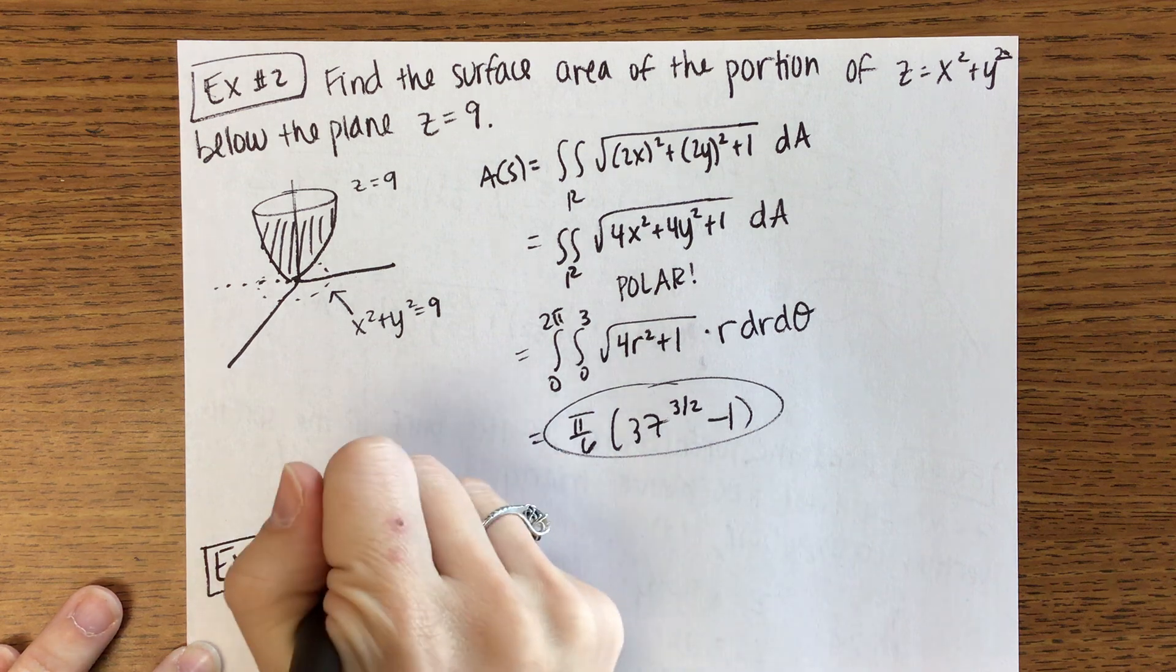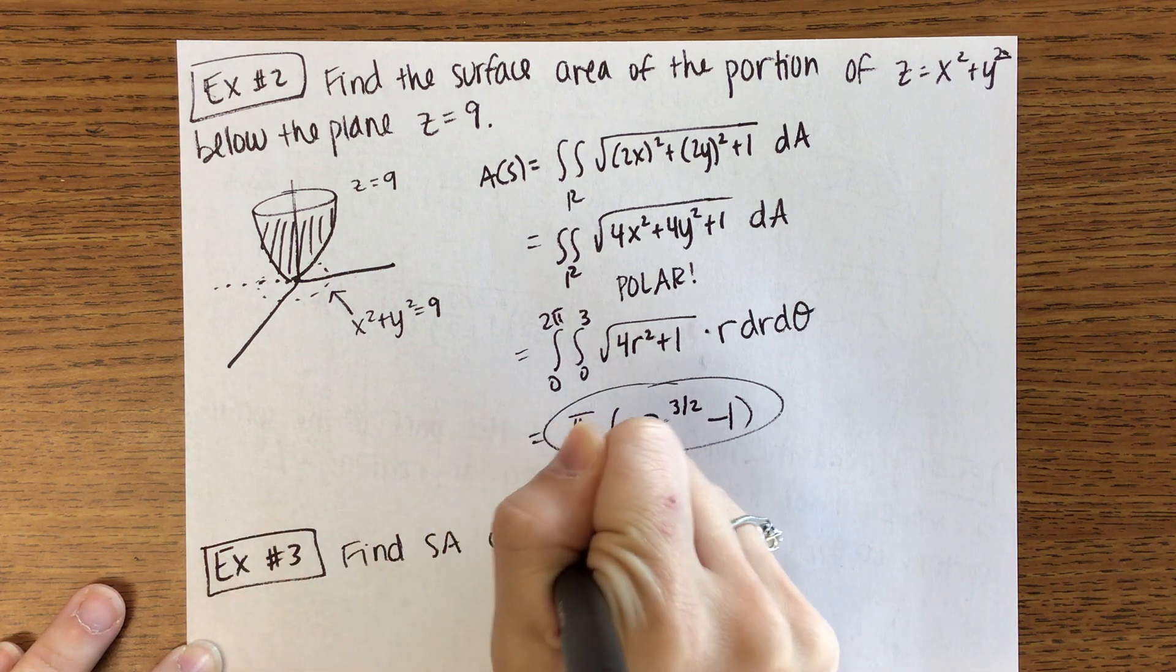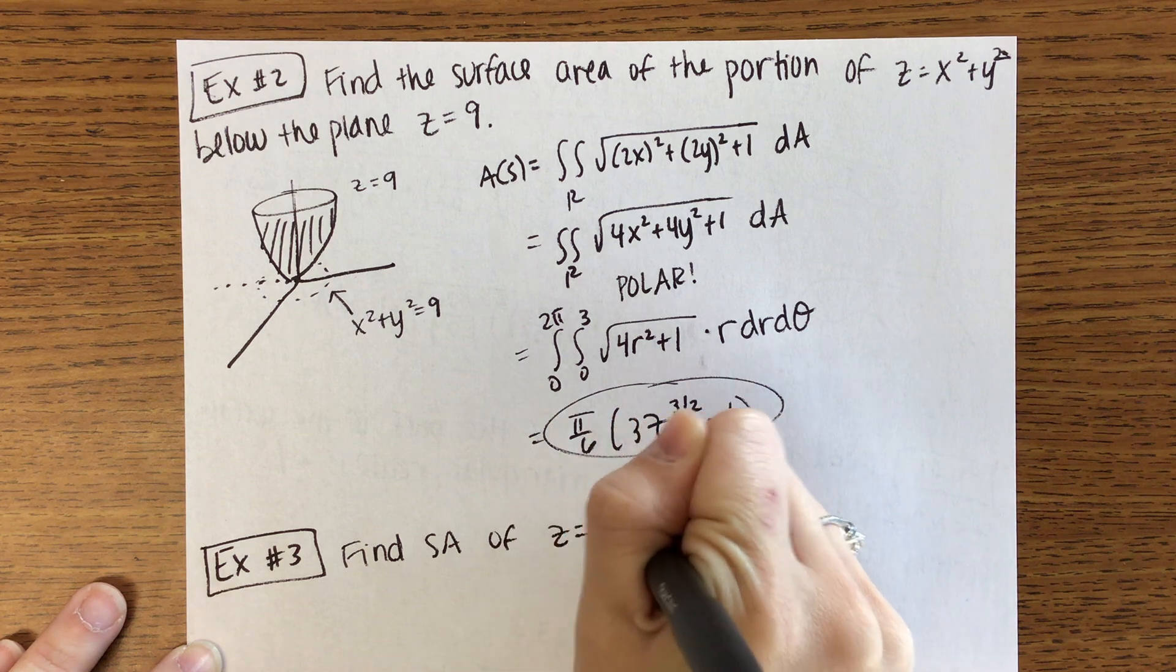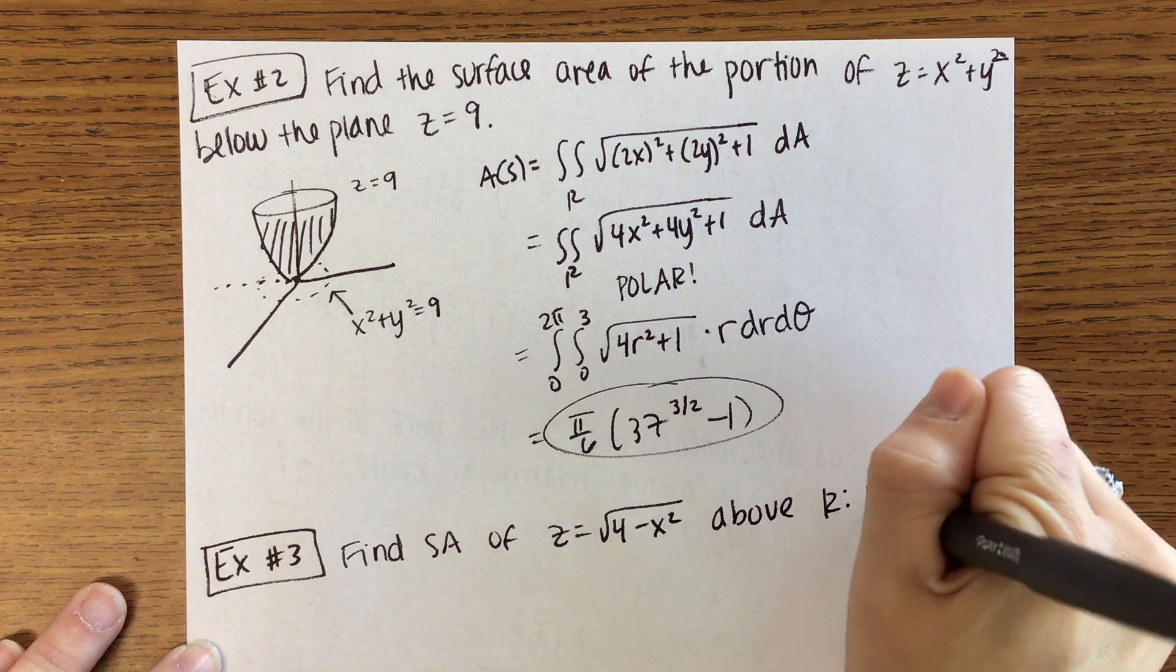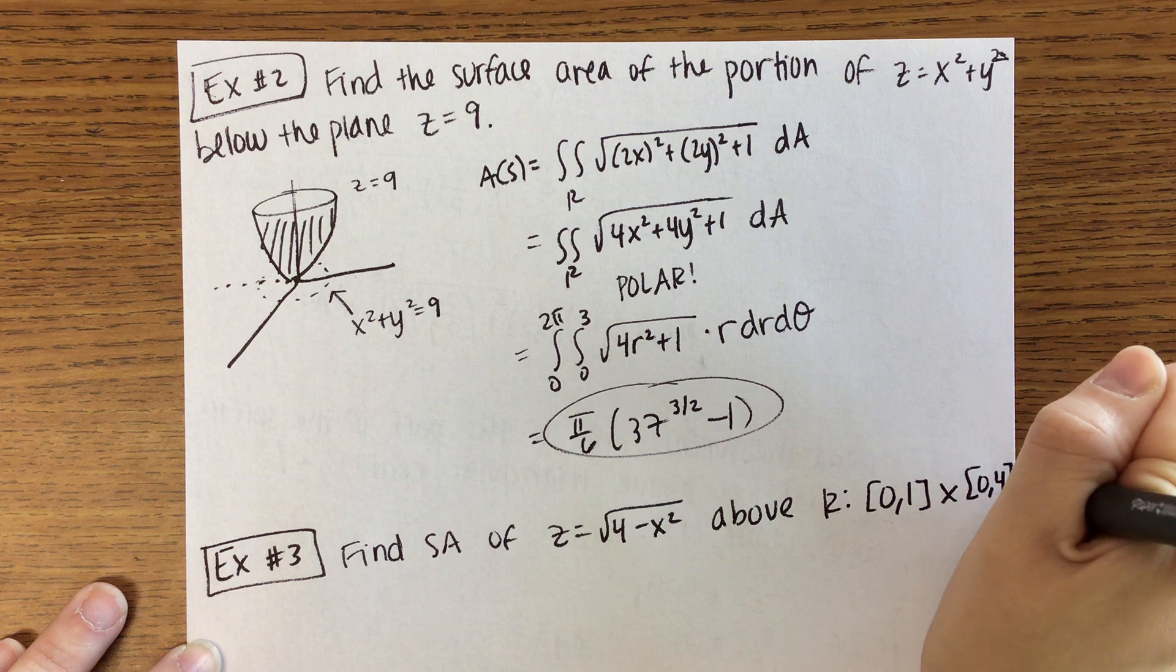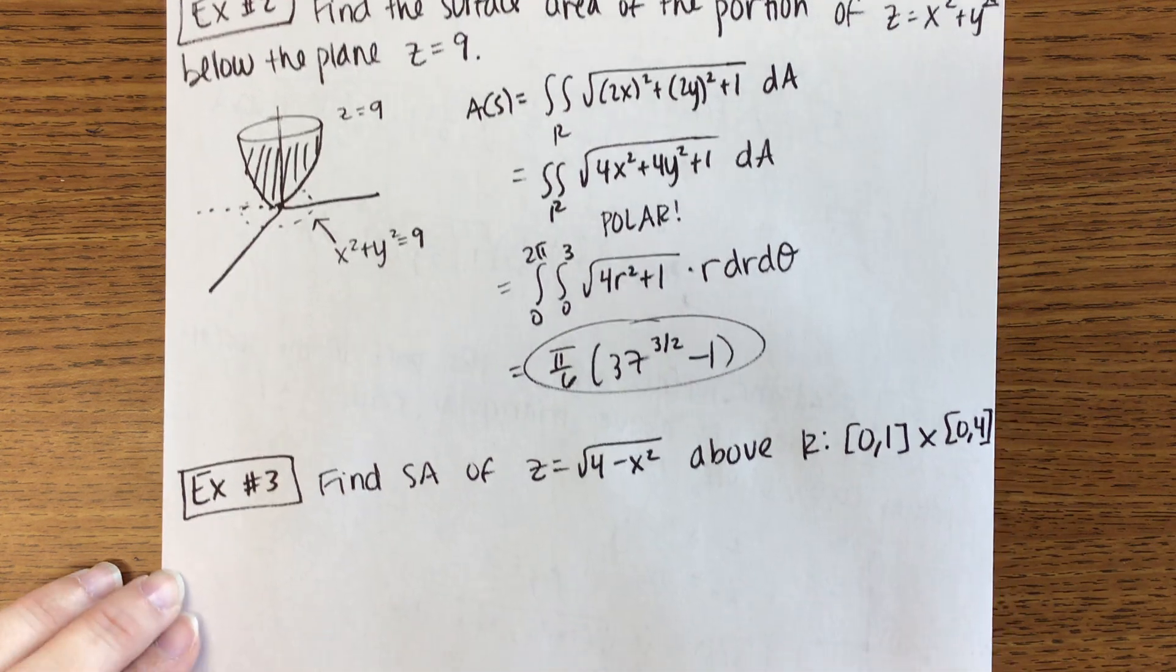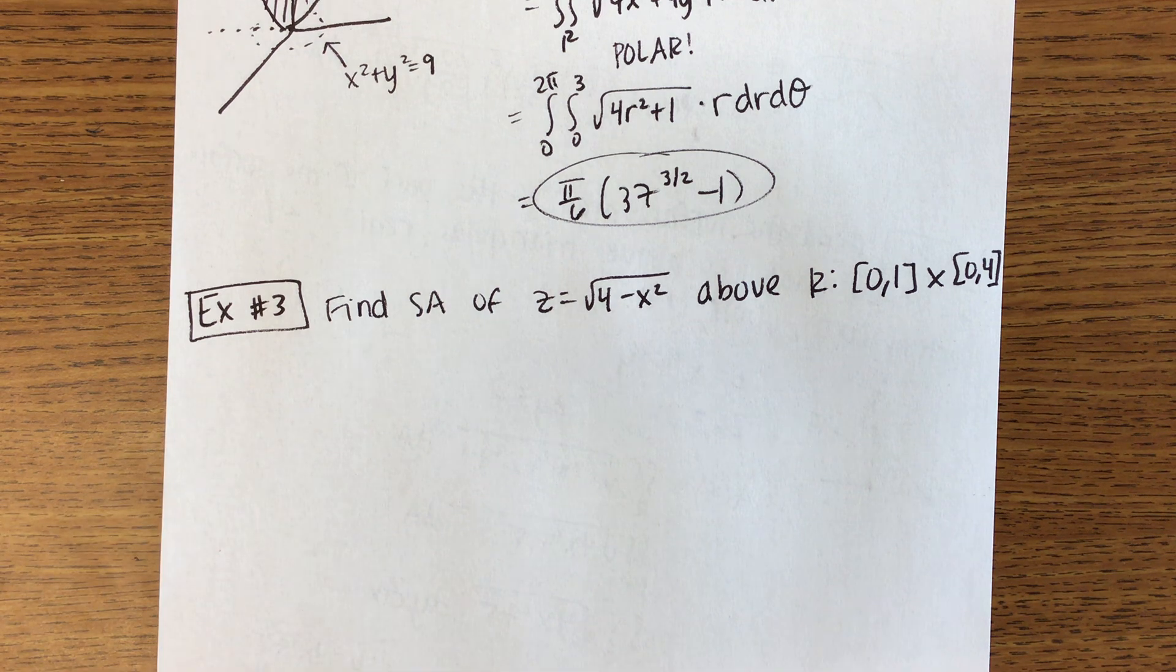Okay we got one more example to do. We are going to find the surface area of Z equals the square root of 4 minus X squared which is above the region R. R is the rectangle (0,1) by (0,4).